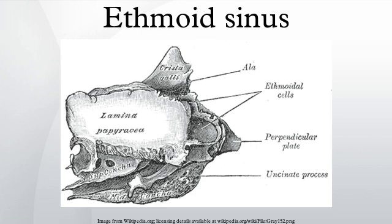The ethmoidal air cells consist of numerous thin-walled cavities situated in the ethmoidal labyrinth, completed by the frontal, maxilla, lacrimal, sphenoidal, and palatine bones. They lie between the upper parts of the nasal cavities and the orbits, and are separated from these cavities by thin bony laminae.